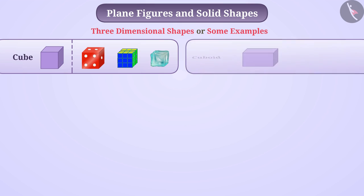This is a cuboid. Objects like matchbox, sweetbox, books, all have the shape of cuboid.